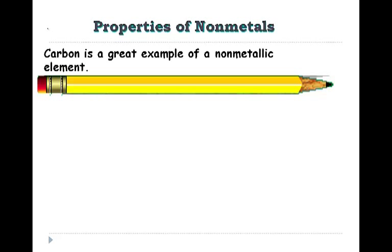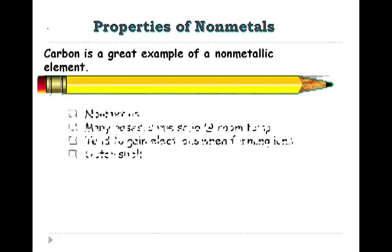Non-metals tend to be poor conductors of heat and electricity. They tend to be brittle, they lack luster, and many are gases, some are solids. And bromine is the only liquid non-metal at room temperature.